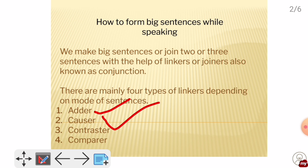Then we have contrast — when we use contrast, we join two sentences that show opposite ideas. Then we have comparison, when we compare two sentences. So all these sentences are mainly linked using four types of linkers. These four cover more than 80% of sentences you will use.